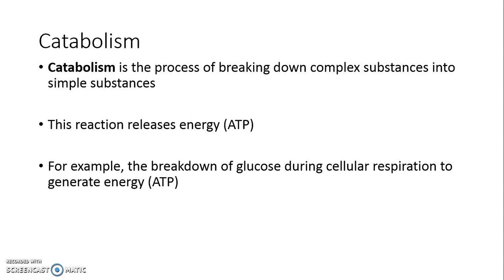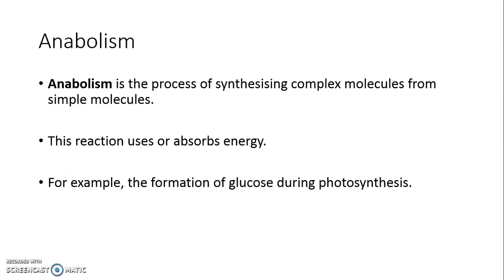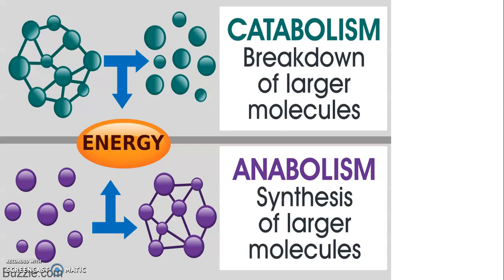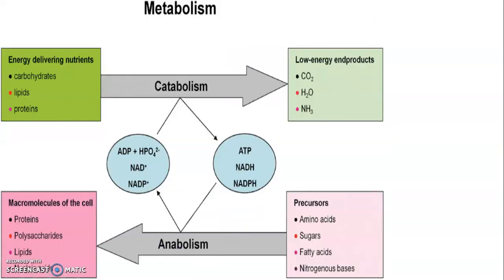To summarize: catabolism is the process of breaking down complex substances into simple substances, releasing or generating energy. For example, the breakdown of glucose during cellular respiration. Anabolism is the synthesizing of complex molecules from simple molecules, and this reaction requires energy — if there is no ATP, anabolism will not take place. For example, the formation of glucose during photosynthesis. Catabolism breaks down larger molecules, while anabolism synthesizes smaller molecules into larger ones.